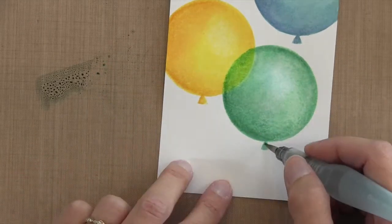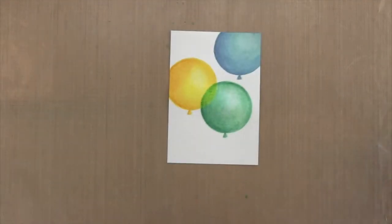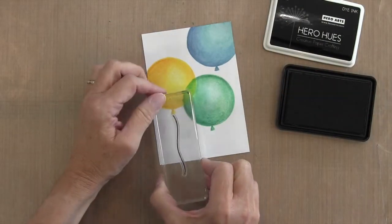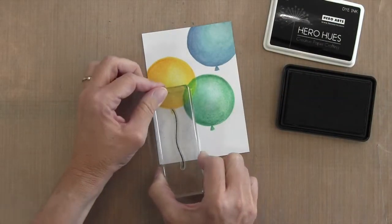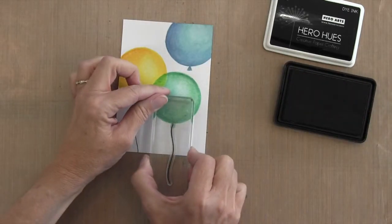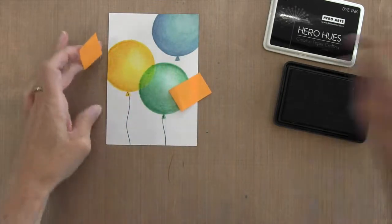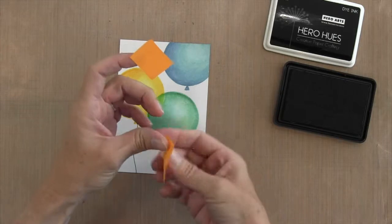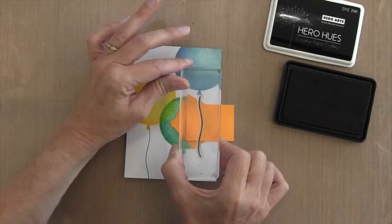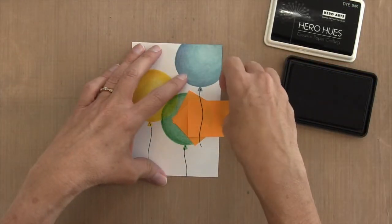I wanted to use a curvy string instead of a straight string, so I pulled the string from the Balloon Builder set. I'm using some Hero Hues, just Hero Arts black ink, and I'm going to do the yellow balloon and the green balloon. Now when it comes to the blue one, I want it to be faded behind the green balloon, so I'm going to cut a Post-it here. You could cut a mask for the balloon, but I was being a little bit too lazy, so I just covered up the balloon with Post-its. Then I'm stamping over it so I get a dark area at the top and at the bottom.